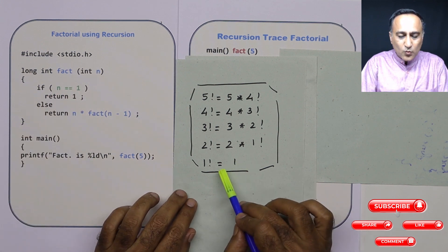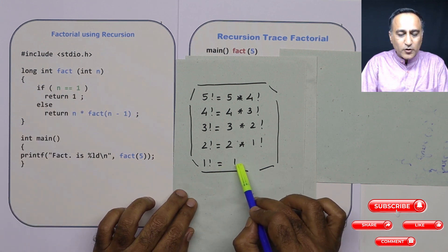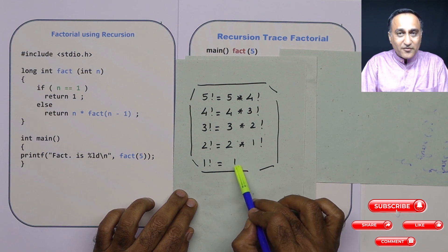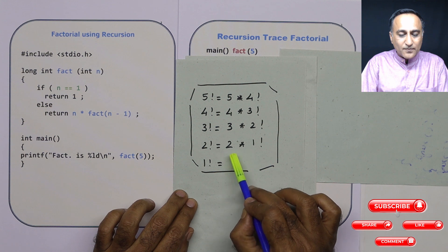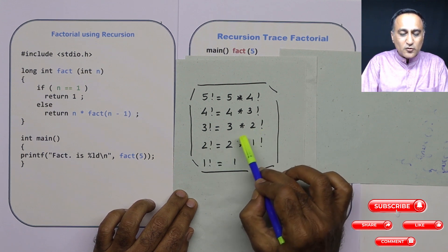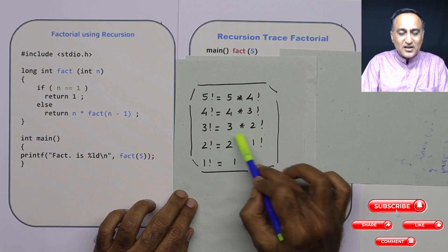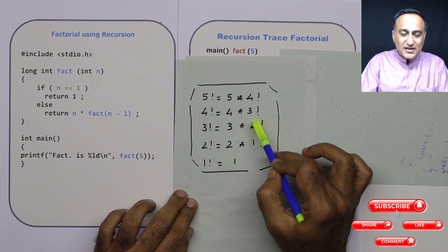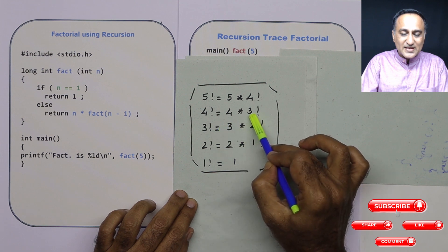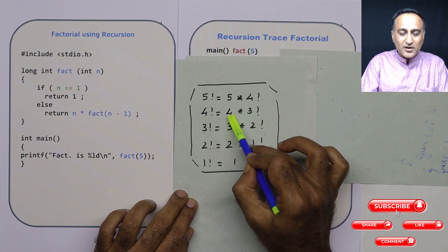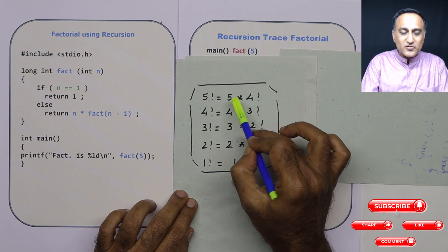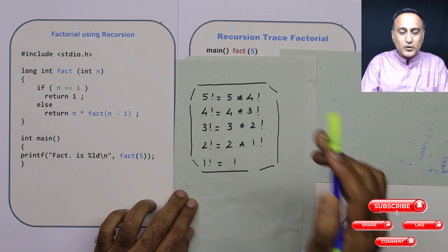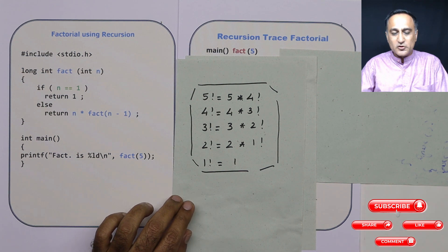When n is equal to 1, I am able to get the factorial of 1. Once I get the factorial of 1, I can replace that 1 factorial with 1. So now I can get 2 factorial, which is 2. Replace 2 factorial with 2, giving 3 factorial as 6. Replace 3 factorial with 6, which gives 4 factorial as 24. Replace 4 factorial with 24, which gives 5 factorial as 5 into 24, which happens to be 120.